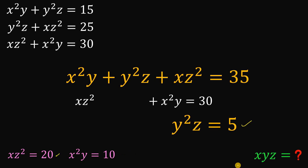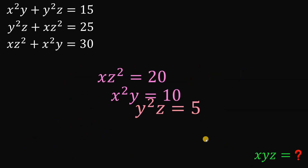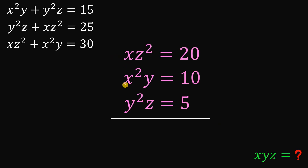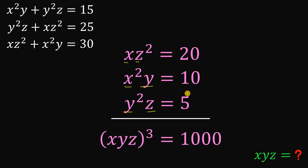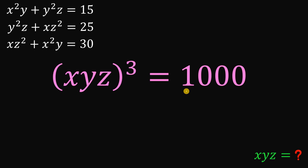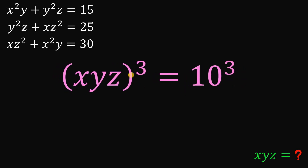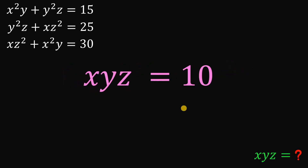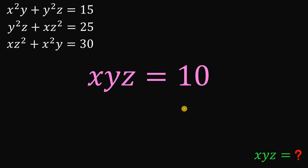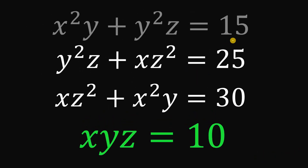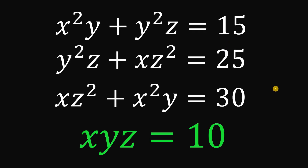Using these three results, we can now find the product of x, y, and z. We multiply all three results together: since we have 3x, 3y, and 3z across the terms, the product of the left-hand sides equals xyz raised to the power of 3. On the right-hand side, 20 times 10 times 5 gives us 1000, which equals 10 raised to the power of 3. Taking the cube root of both sides, the product x, y, z simply equals 10. This is our answer. Therefore, given these three equations, the product of x, y, and z equals 10.